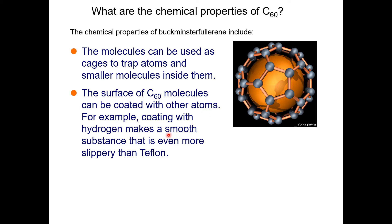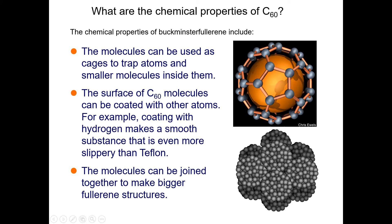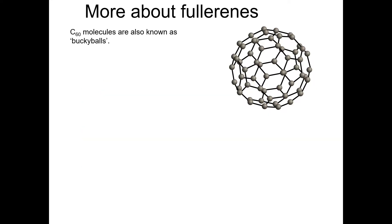A good example of surface coating is coating with hydrogen atoms, which makes a smooth substance even more slippery than Teflon. The molecules can also be joined together to make bigger Fullerene structures with nanoscale properties. Carbon-60 molecules are also commonly known as buckyballs — that is a well-known nickname for Fullerenes.